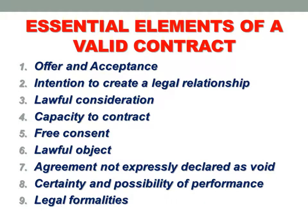Apart from the conditions laid down by Section 10, we will add a few more found in the Indian Contracts Act, and together we will discuss them under nine different heads. Number one: offer and acceptance. Two: intention to create a legal relationship. Three: lawful consideration. Four: capacity to contract. Five: free consent. Six: lawful object. Seven: agreement not expressly declared as void. Eight: certainty and possibility of performance. And nine: legal formalities to be fulfilled.